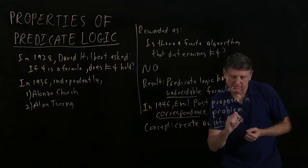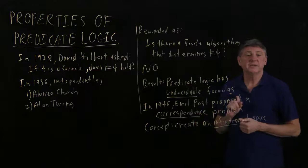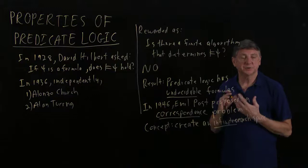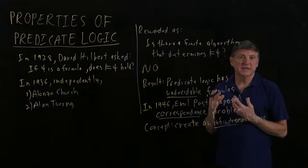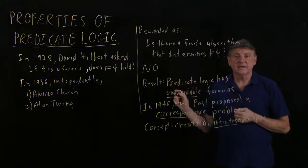And the concept behind this is that what Emil Post did was, he created an infinite search space that had to be checked. And if you have to check an infinite search space, then you can't determine that with a finite algorithm.